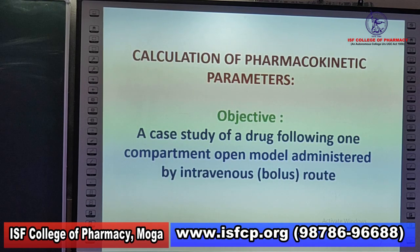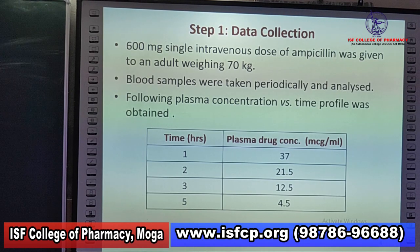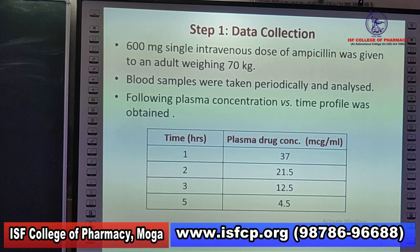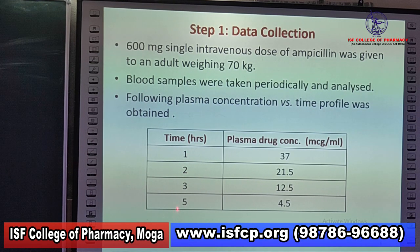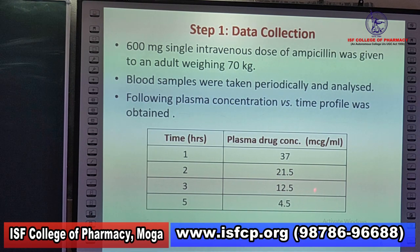The objective of this demonstration is a case study of a drug following a one-compartment open model administered by IV bolus route. In the data collection step, 600 mg single intravenous dose of ampicillin was given to an adult whose weight is 70 kg. Blood samples were taken periodically and the following plasma drug concentration versus time profile was obtained: at 1, 2, 3, and 5 hours, the plasma drug concentrations were 37, 21.5, 12.5, and 4.5 microgram per ml, respectively.